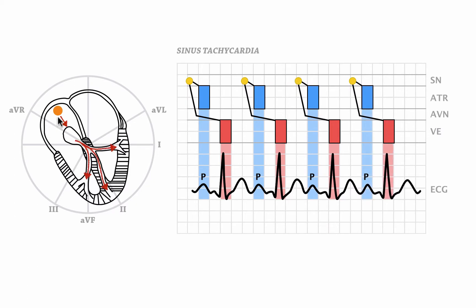Since depolarization of the atria occurs from top to bottom, the arrow is directed downwards towards leads 1 and 2, so P waves will be positive in these leads. And since atrial depolarization occurs before ventricular depolarization, the P waves are preceding the QRS complexes. As you will learn, there are some cases of narrow complex tachycardias where that is not the case.